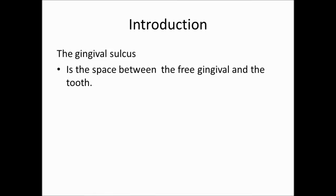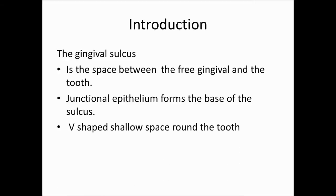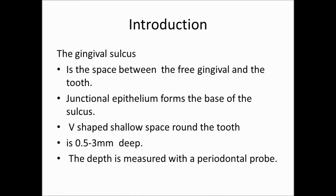By way of introduction, I want to talk about the gingival sulcus. The gingival sulcus is the space between the free gingiva and the tooth. The base of this sulcus is formed by the junctional epithelium. It is a V-shaped shallow space around the tooth, between 0.5 to 3 mm deep. The depth is measured with the periodontal probe.